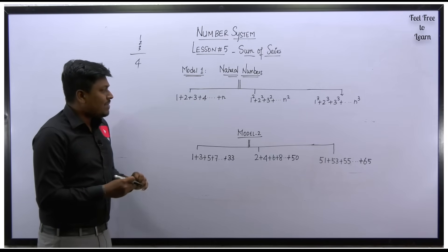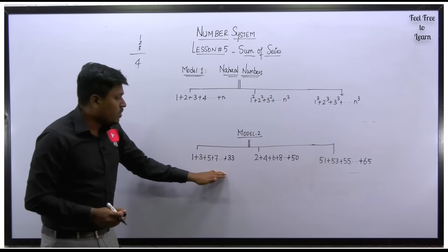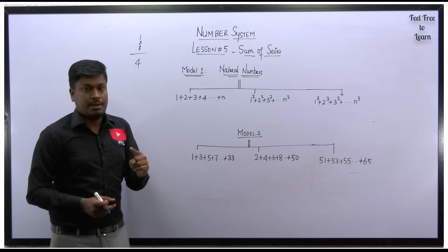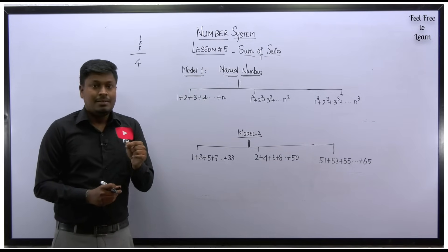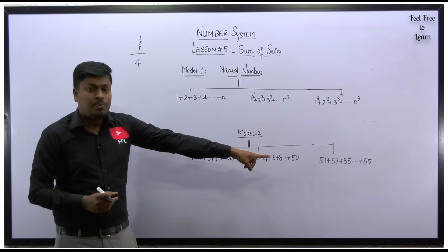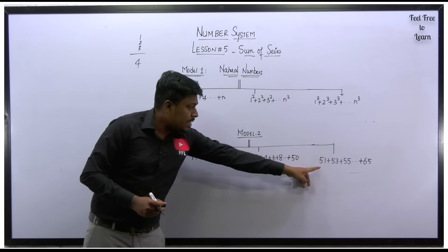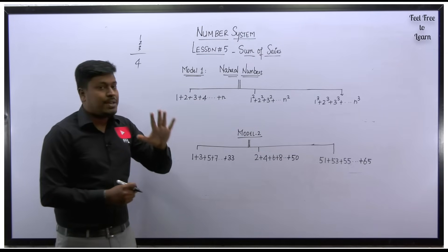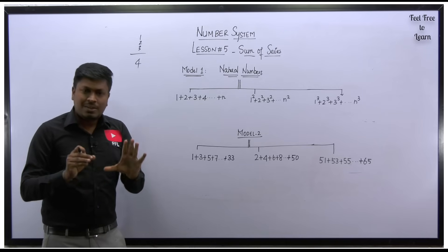Totally we have 5 formulas. For model number 1 we have 3 formulas, and for model number 2 we have 2 formulas. For some cases, most students will make a mistake by learning a new formula for the last set. So instead of learning a new formula there, we can apply the 5 formulas we already learned. So totally you have to learn 5 formulas in order to solve questions from sum of series.